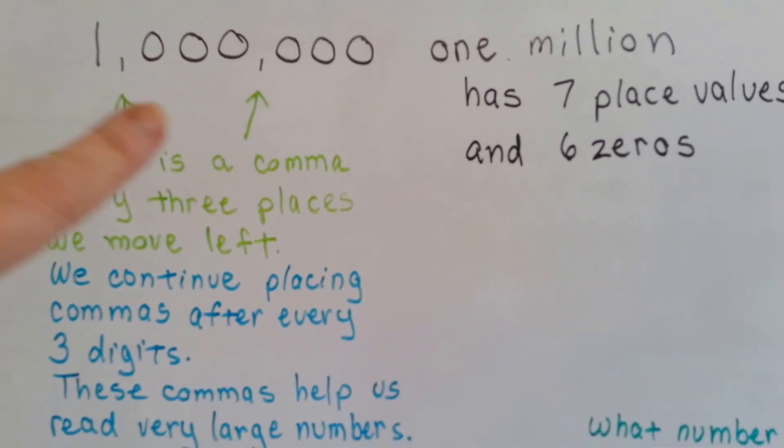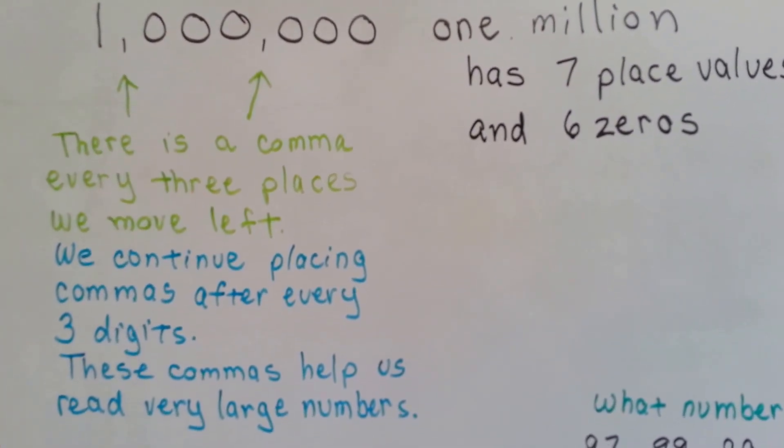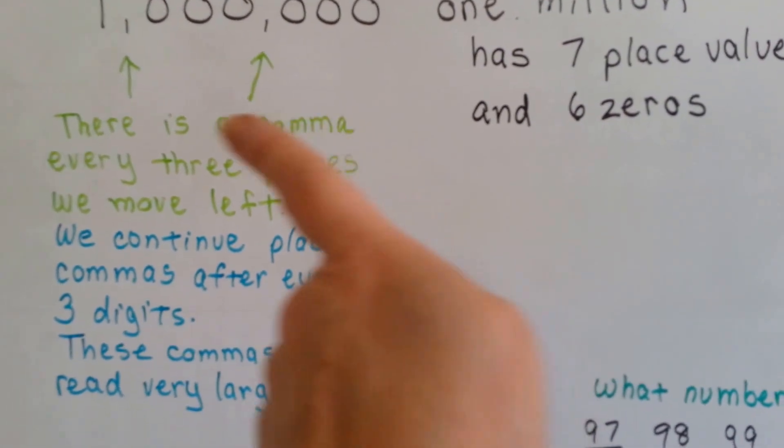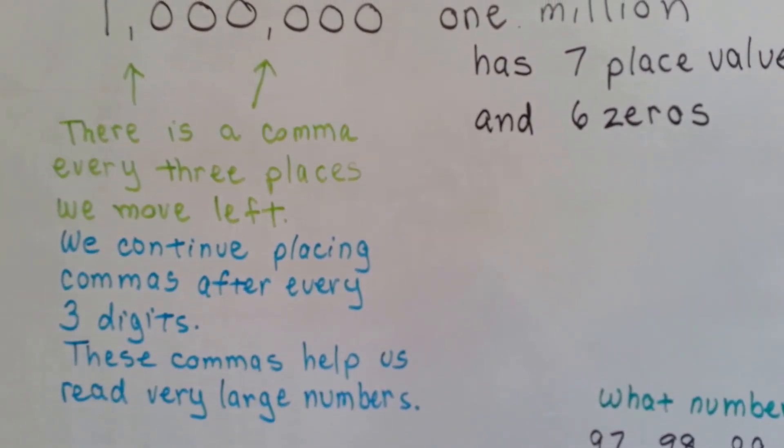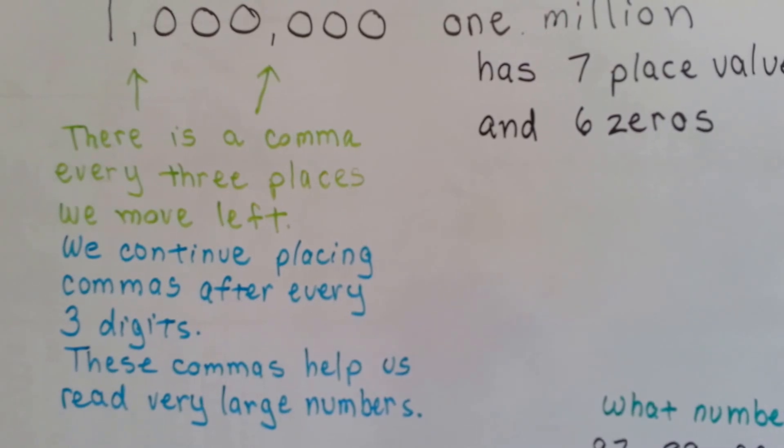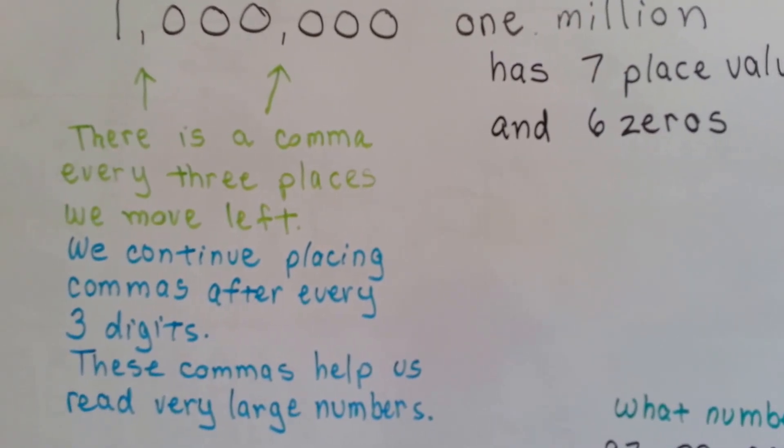There's a comma. See the commas? Every three places we move to the left, we continue placing commas after every three digits, and these commas help us read very large numbers.